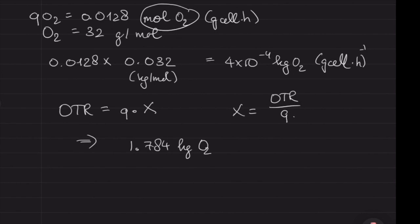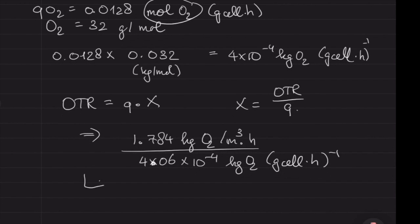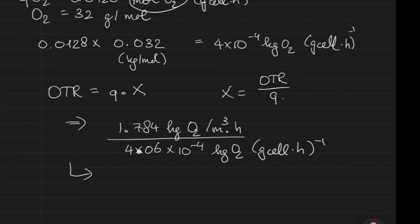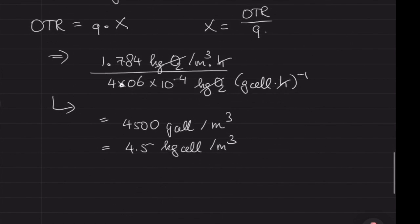X equals OTR divided by q. When you divide these two answers, you end up with the correct units. Always write out the units to make sure they're correct. They're both in kilograms, so those cancel out, and both per hour, so you end up with grams of cells per volume in the reactor. Bear in mind the answer has to be reasonable—roughly between 1 kilogram per cubic meter to maybe a bit more than 10. Here, your final answer should be 4.5 kilograms per cubic meter.